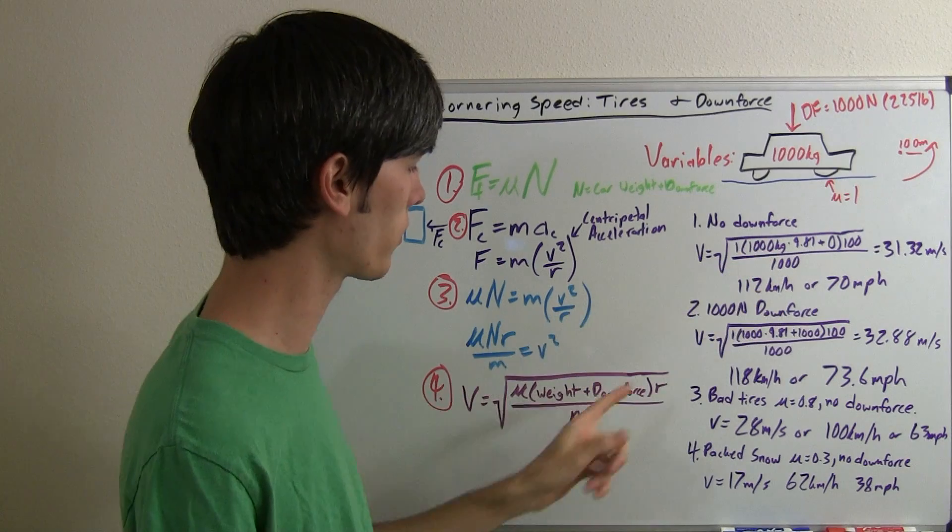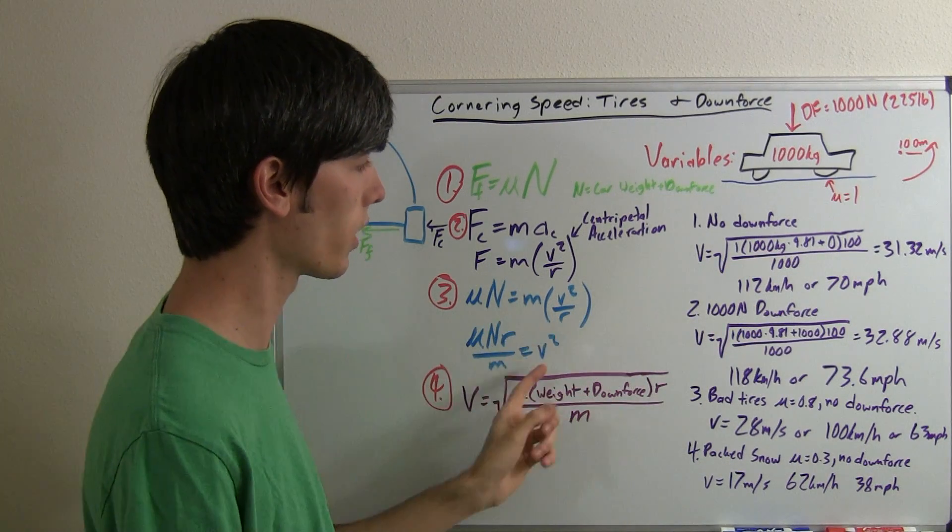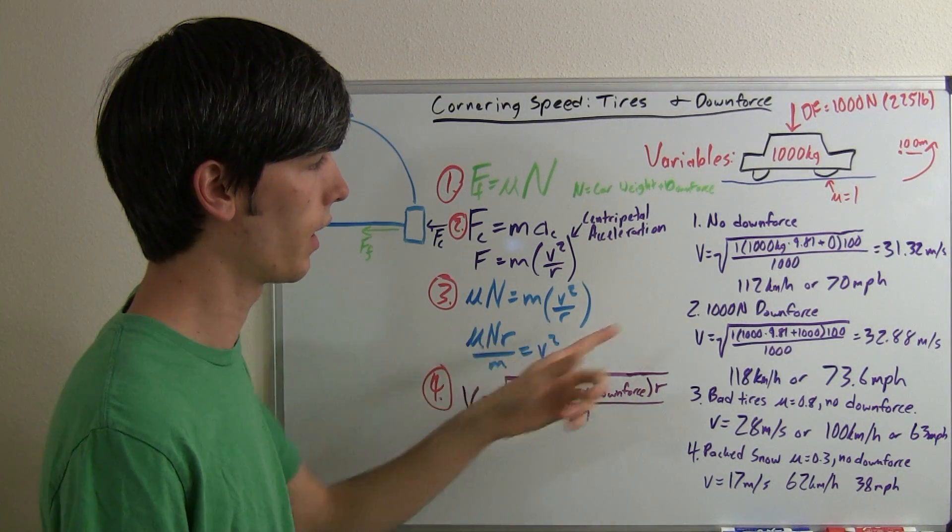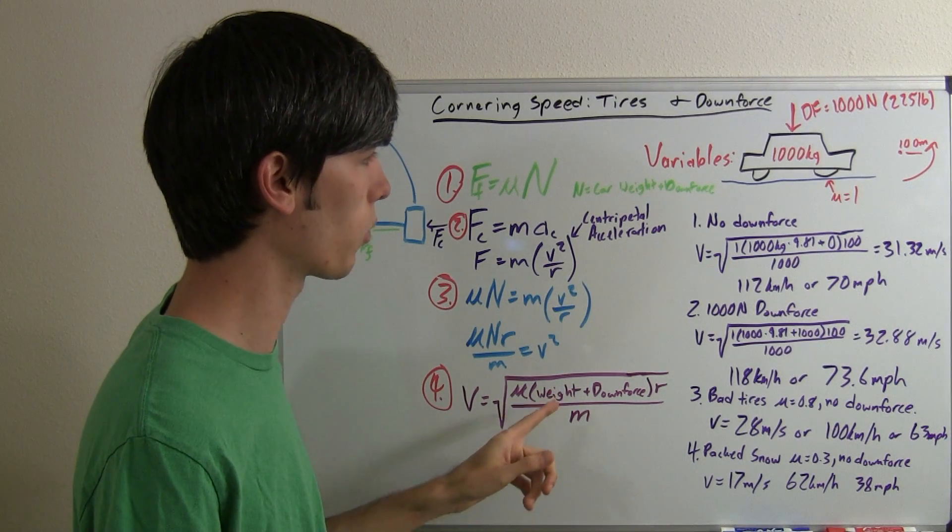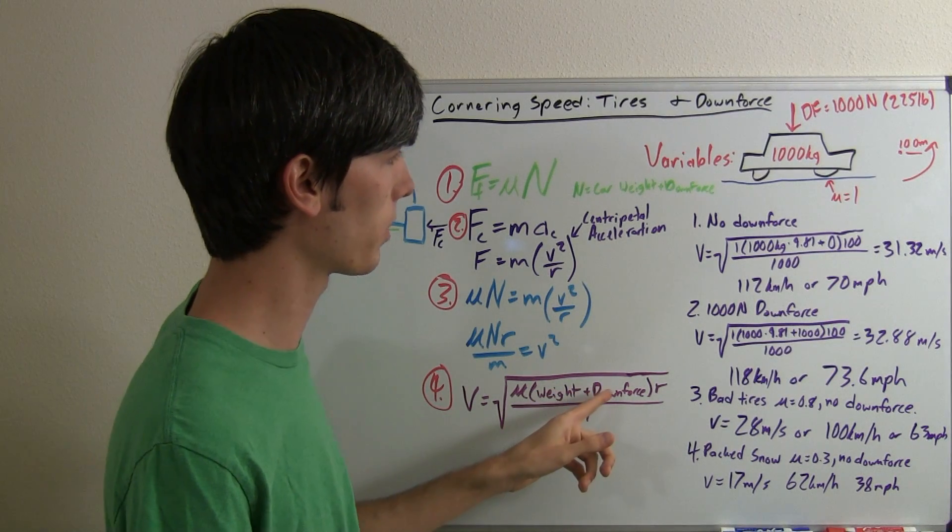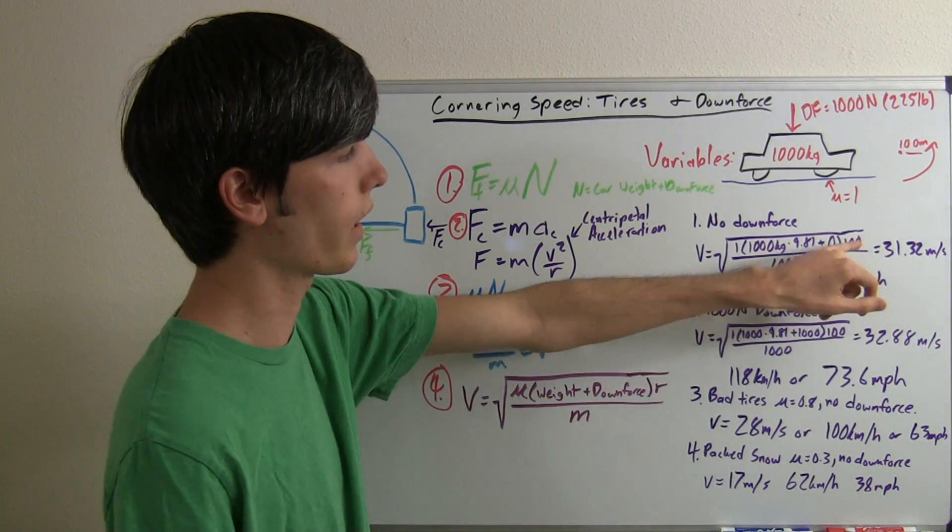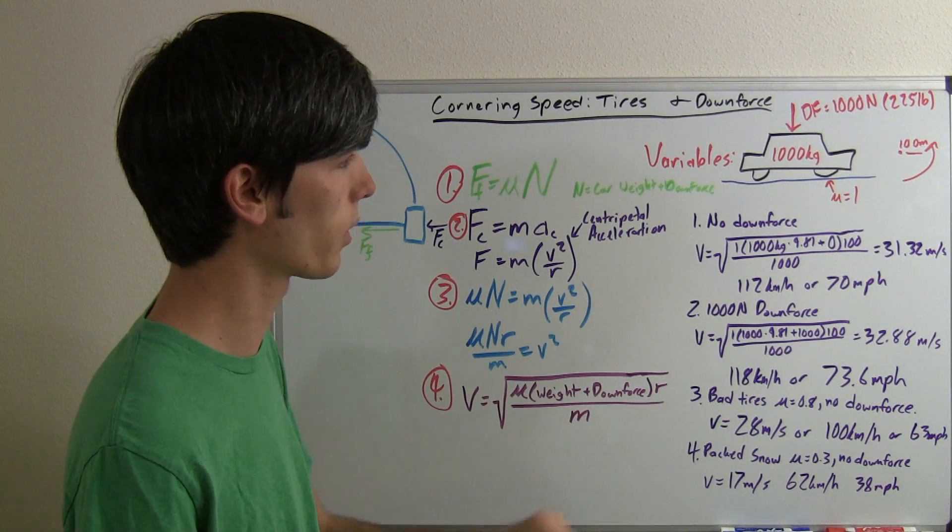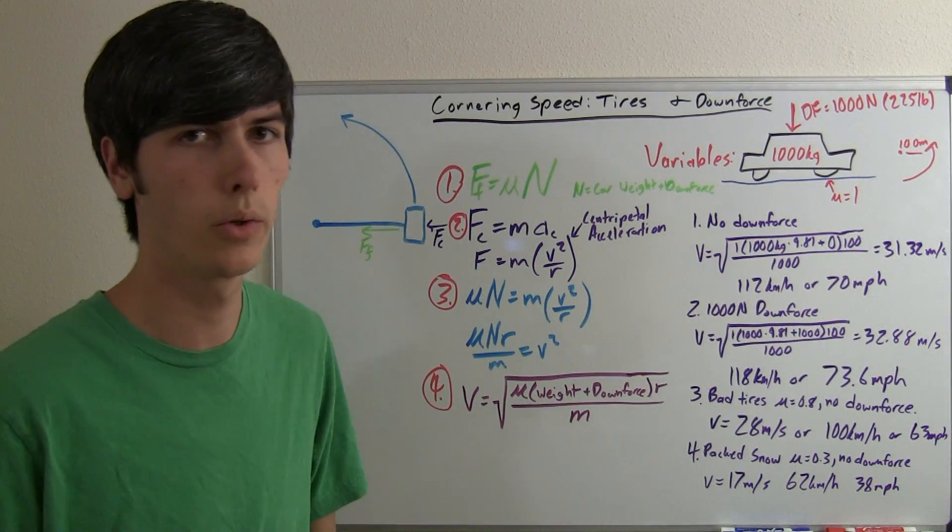We're going to have v equals the square root of one plus a thousand kilograms is the mass, we need to multiply that by 9.81 meters per second squared. That's gravity. And that will give us its weight, the force of the weight. And plus, we're going to add in the downforce. In this case, we're not going to add any downforce. We've got 100 meters for the radius and 1,000 kilograms for the mass. So, we multiply that out, it gives you 31.32 meters per second.